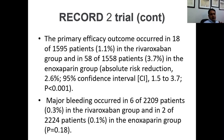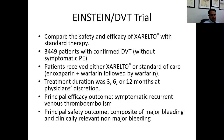The primary efficacy outcome occurred in 18 of approximately 1,600 patients (1.1%) in the rivaroxaban group and in 58 of 1,558 patients (3.7%) in the enoxaparin group. Major bleeding occurred in 6 of approximately 2,200 patients in the rivaroxaban group and in only 2 of approximately 2,200 patients in the enoxaparin group.